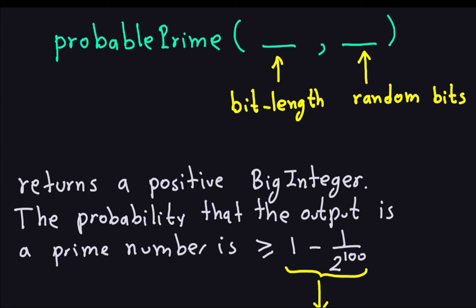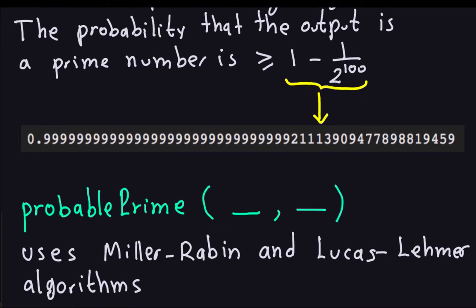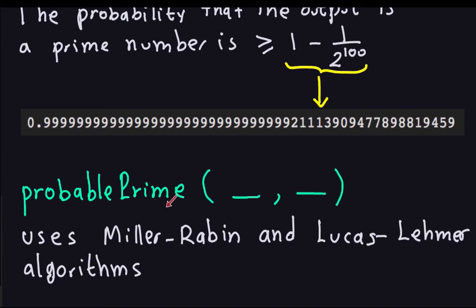The only things you need to provide are the bit length of the prime you want and some random bits produced with a random object. This probablePrime method uses the Miller-Rabin algorithm, the one described in the RSA videos, and it also uses the Lucas-Lehmer algorithm, which is another way to check for prime numbers. So this function is implemented using those algorithms, along with some other methods inside probablePrime.